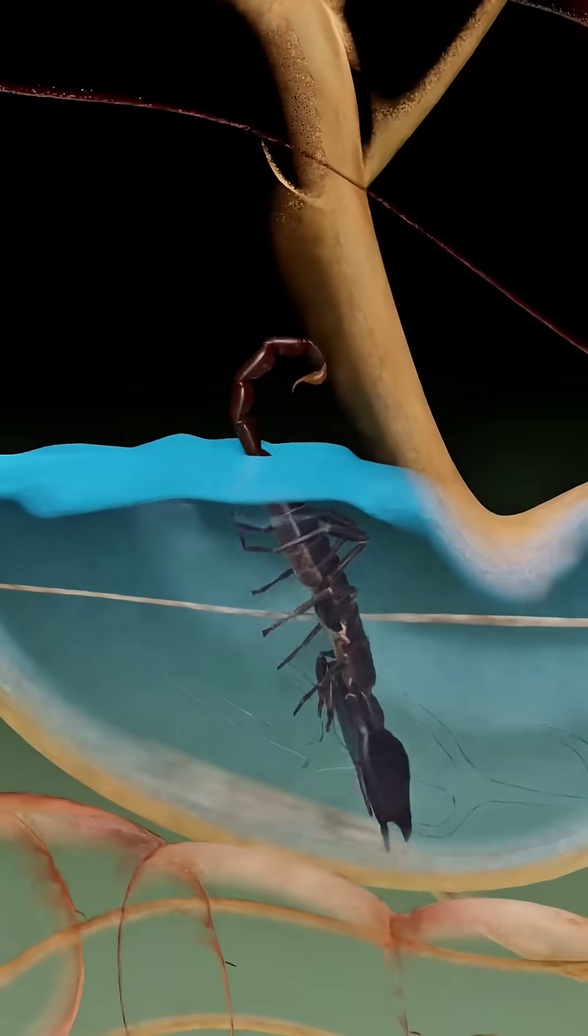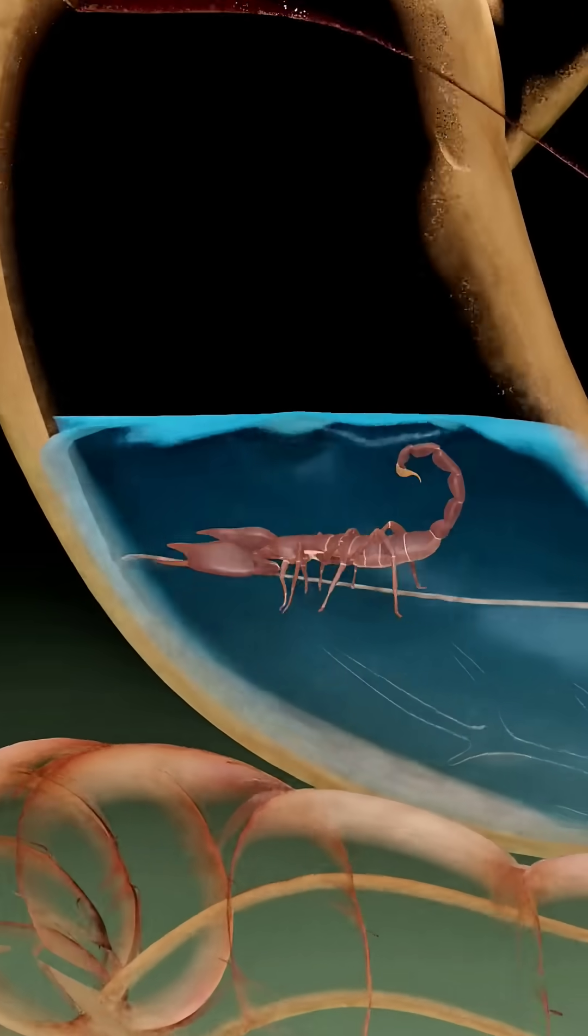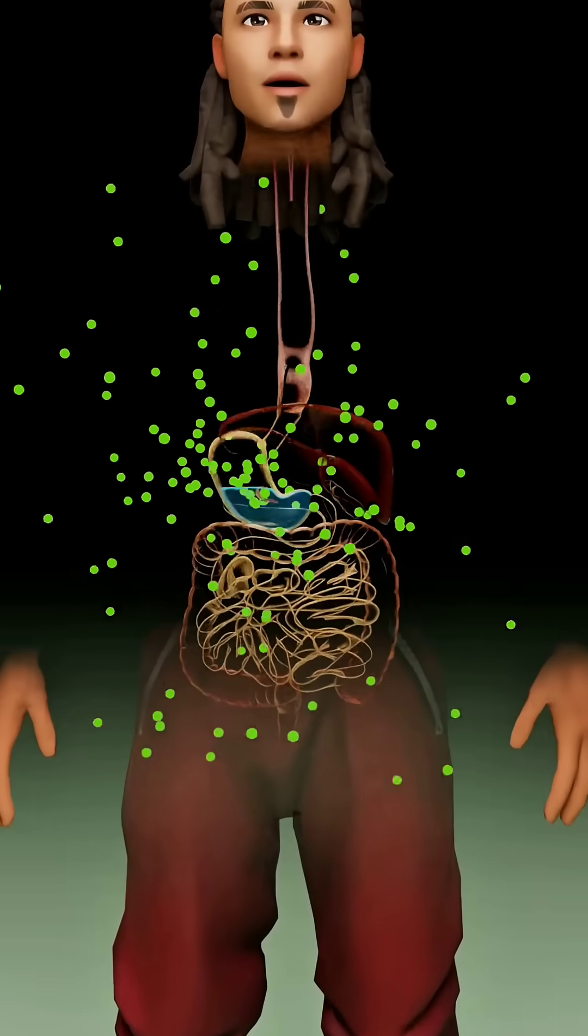In panic, it starts stinging and releasing venom inside your stomach. The reaction causes intense pain as the venom mixes with your digestive fluids.